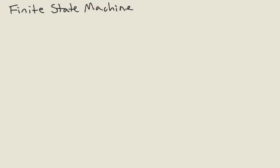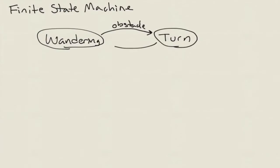We can represent this as a kind of graph called a finite state machine. The robot starts off in a wandering state. At some point, it encounters an obstacle and transitions to a turning state. When the obstacle has cleared, it goes back to wandering.